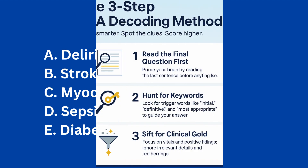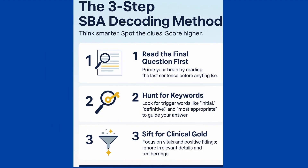So, let's recap the three-step decoding method. Step 1: read the final question first to prime your brain. Step 2: hunt for keywords like 'initial,' 'definitive,' and 'most appropriate.' Step 3: sift for clinical gold in the vignette, focusing on the vitals and positive findings while ignoring the noise.